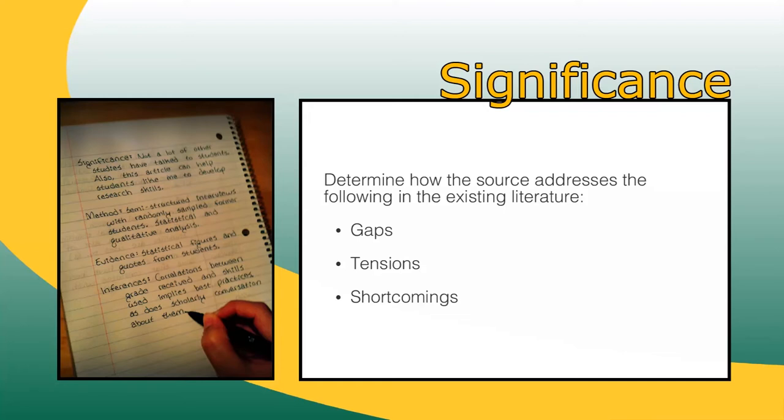One good way to analyze this relationship is to figure out how the article justifies its research program to other scholars. Why does this question matter, and how would an answer contribute to the knowledge about the topic?